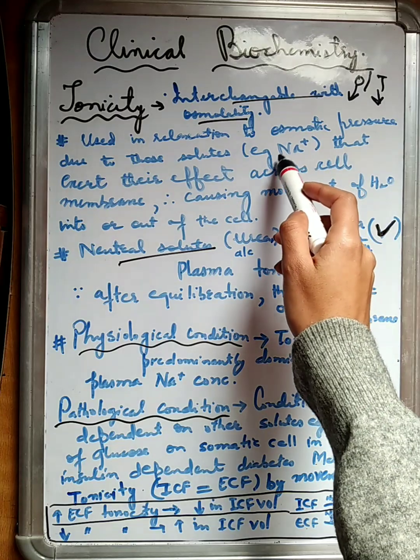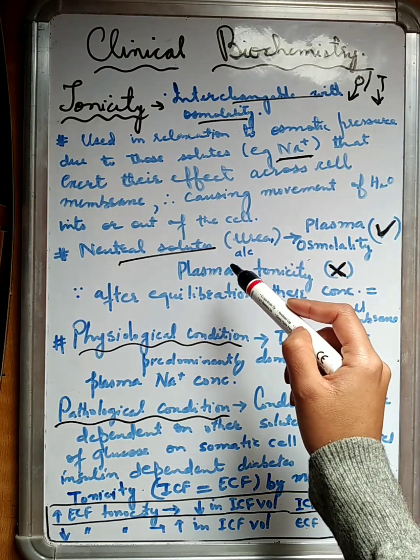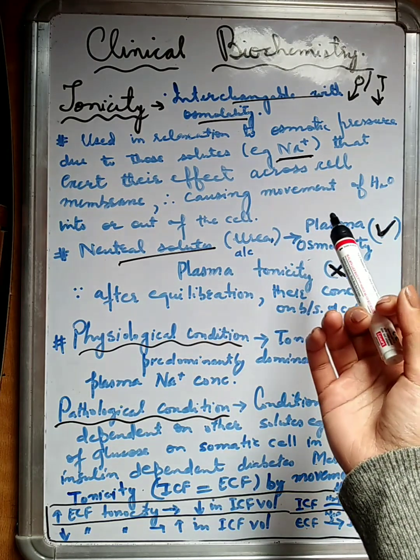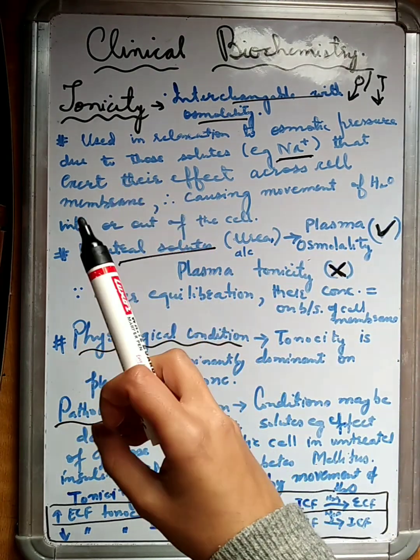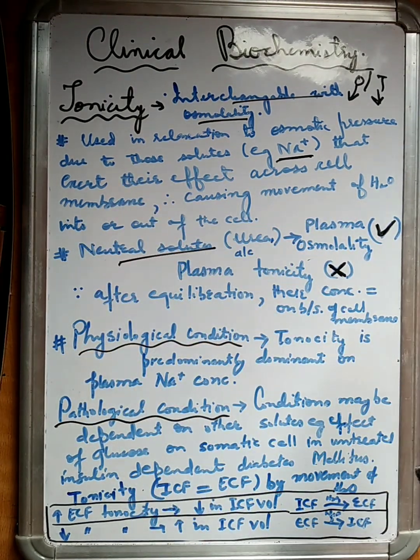We have already told you about anions and positive ions. These are good examples that exert their effect across the cell membrane and cause water to drag from one compartment to the other.